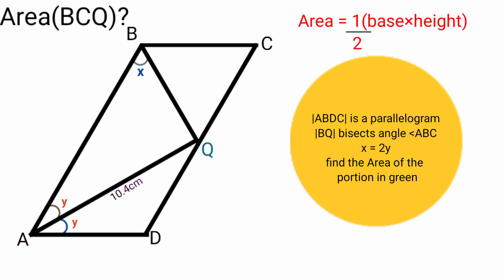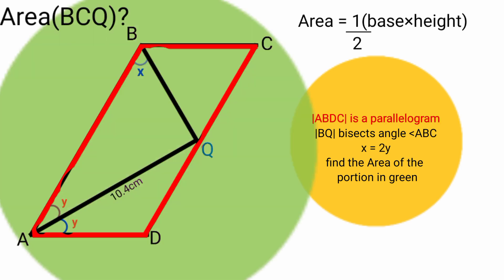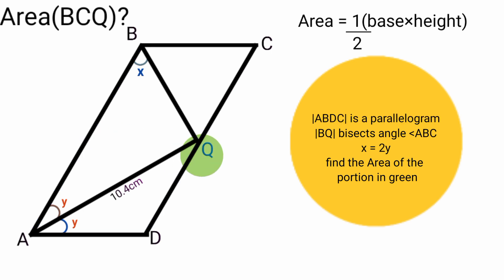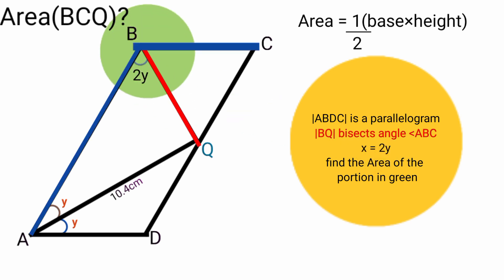To find the base and height we need to know what type of triangle it is, which requires either the side lengths or interior angles. We're told that shape ABCD is a parallelogram, which means BC is parallel and equal to AD, and AB is parallel and equal to CD. Also, X equals 2Y, and line BQ bisects angle ABC, dividing it into two equal halves.